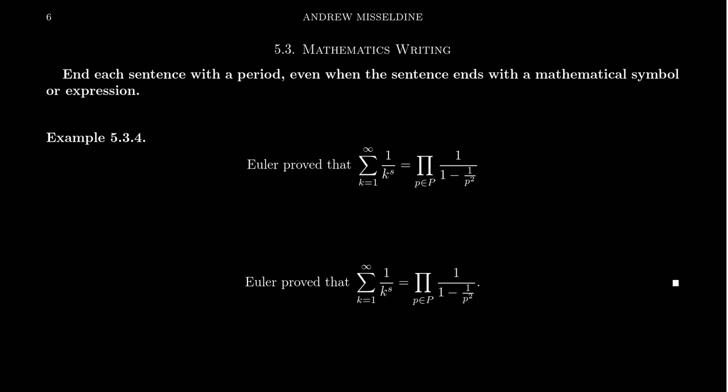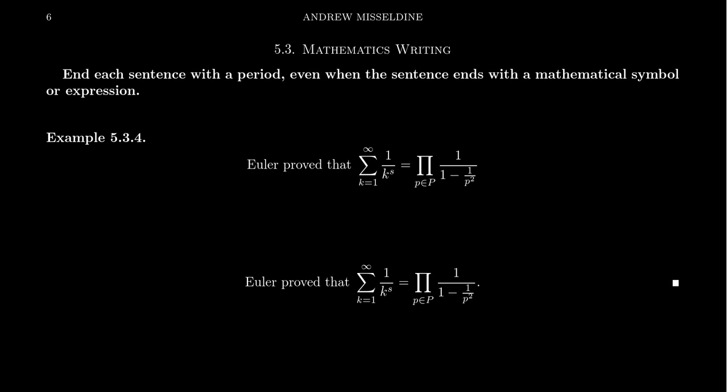So even if a sentence is crawling with mathematical symbols, even if literally every character in a statement is a mathematical symbol, take for example an equation like x squared plus 2x plus 1 equals 0. That right there is a mathematical sentence, but it's still a sentence and therefore it requires we follow proper punctuation.